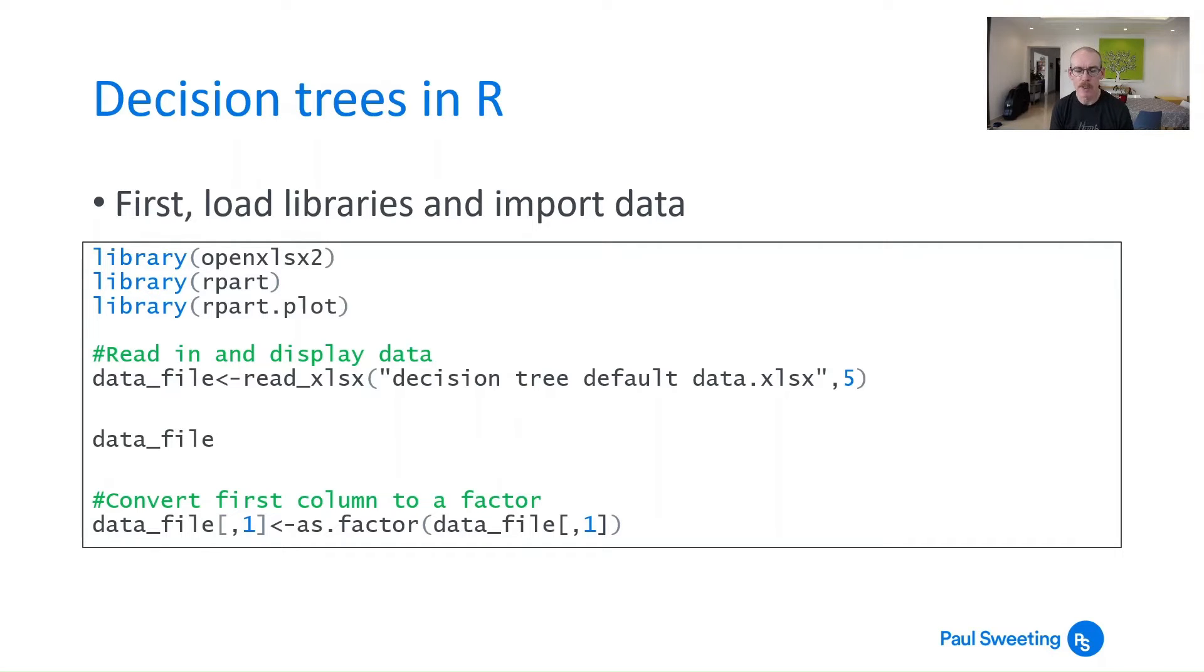So the first thing I do is I read in and display the data. The first line of code reads in that particular file and it reads in sheet 5 of that file. Then display data file just to make sure that I've got what I've expected. And then one thing I need to do is the first column which has the information on whether a firm is solvent or insolvent which I've put in as 1 or minus 1, I need to convert that to a factor.